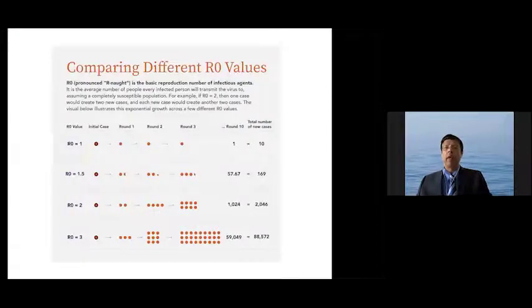These are the different R0s we will consider. If the R0 is 1, after 10 cycles, 10 people will be infected. But if the R0 is 3, you can see after 10 cycles, close to 88,000 people are infected. And this is the importance of bringing the R0 down.